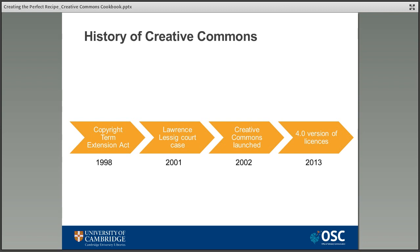The Creative Commons organization was created to help address these tensions and also as a result of other copyright developments. In 1998 the US Copyright Term Extension Act extended the term of copyright for every work in the US by an extra 50 years, bringing it in line with other countries where the default term is the lifetime of the creator plus 70 years. Lawrence Lessig, a professor of law at Stanford University, thought this extension was unconstitutional as it kept works out of the public domain for longer and was actually stifling the very creativity that copyright was meant to help promote. His resulting court case failed but led to the creation of both the Creative Commons organization and the licenses themselves.